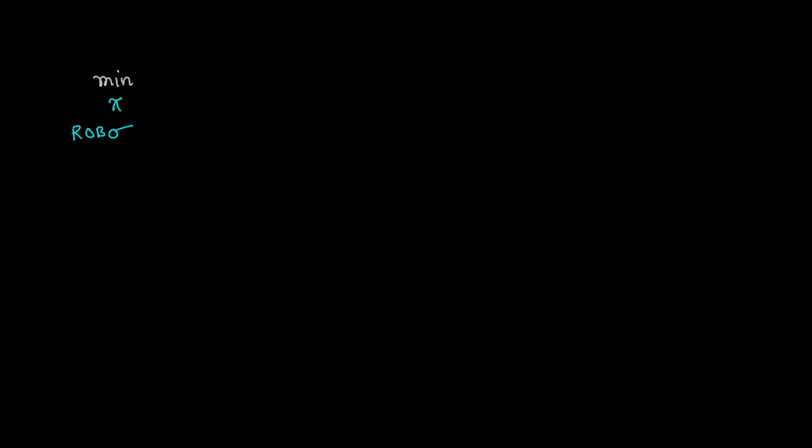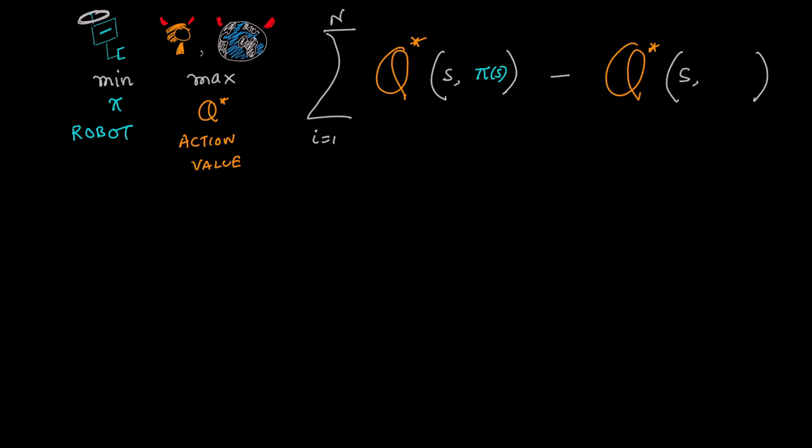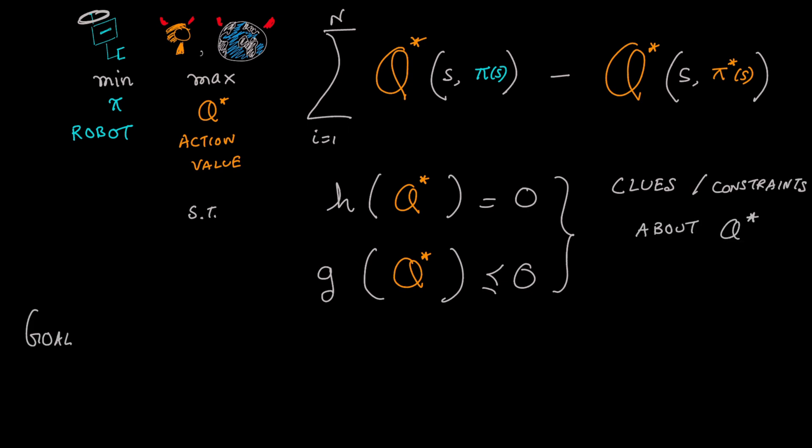The payoff of the game is the value difference between the robot and the optimal human policy. The value function player tries to make the difference large while satisfying constraints induced by the observations from the human and the world. The robot learning goal is to reach epsilon equilibrium of this game.